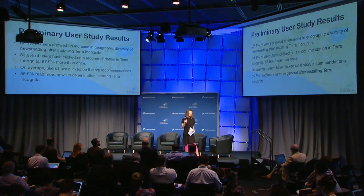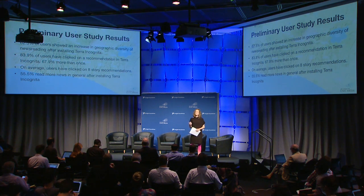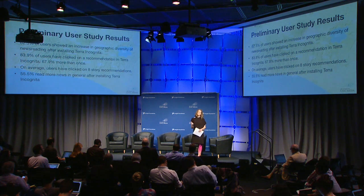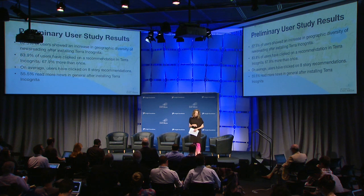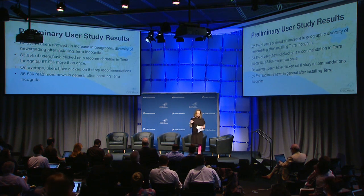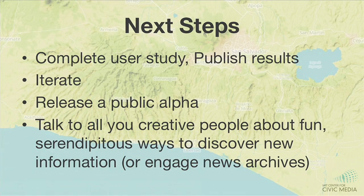Preliminary user study results show that 62.5% of users show an increase in geographic diversity of news reading after installing Terra Incognita. A really important secondary finding is that 55% of people are actually reading more news in general — not necessarily with a geographic dimension. Our next steps are to complete the study, do another round of development, and talk about fun, serendipitous ways to engage with finding information outside ourselves.